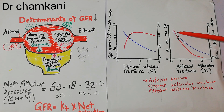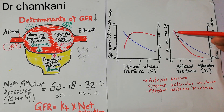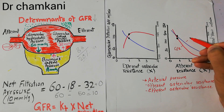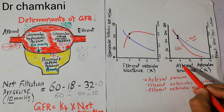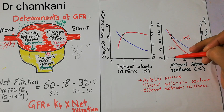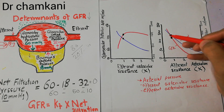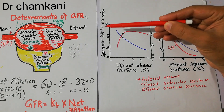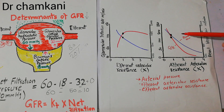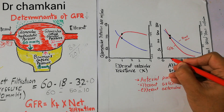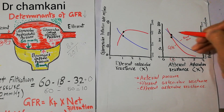On the graph, the red color represents GFR and the blue color represents renal blood flow, plotted against afferent arteriolar resistance. Normally, the afferent arteriolar resistance is at 1x normal, at which the GFR is around 125 ml per minute and the blood flow is also normal.